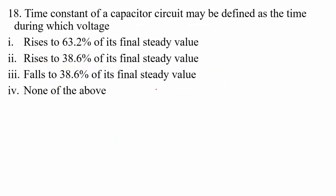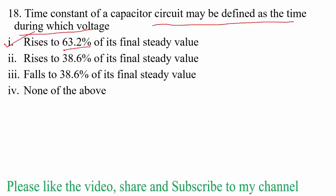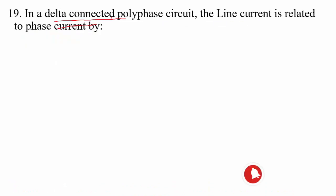Question 18: the time constant of a capacitor circuit may be defined as the time during which the voltage rises to 63.2% of its final value. In the case of first-order systems, especially in control system subjects, the time constant equals 63.2% of the final steady-state value.